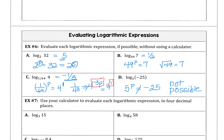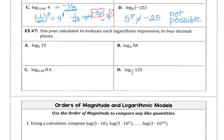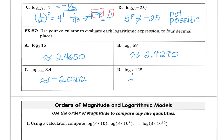Example 7 is calculator driven. Log base 3 of 15 is approximately 2.4650. Log base 4 of 58 is 2.9290. Log base 0.35 of 8.4 is negative 2.0272. And log base 2.5 of 125 is about 5.2694.